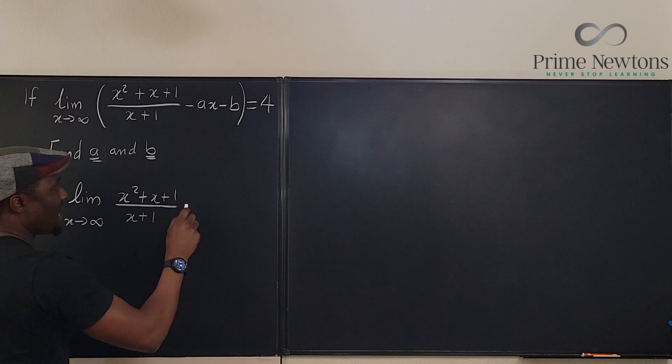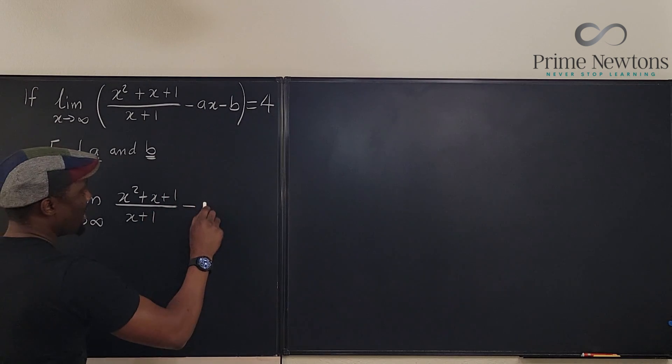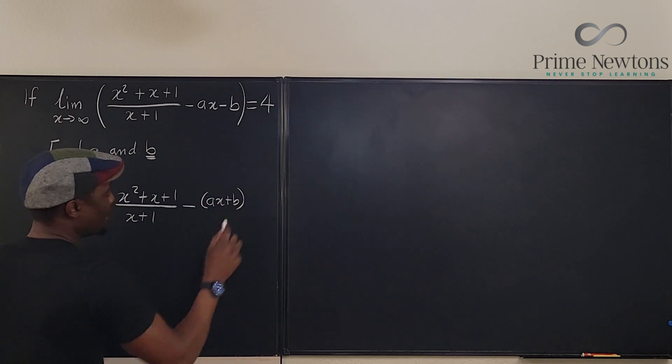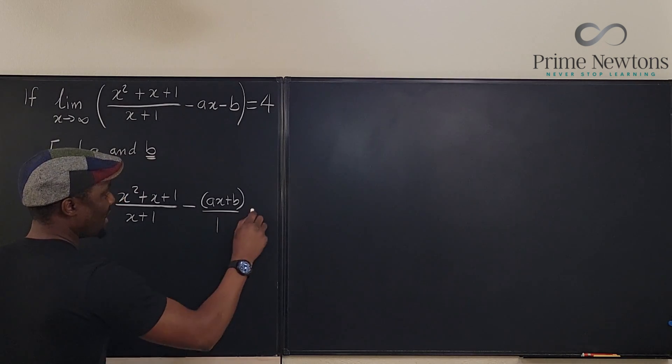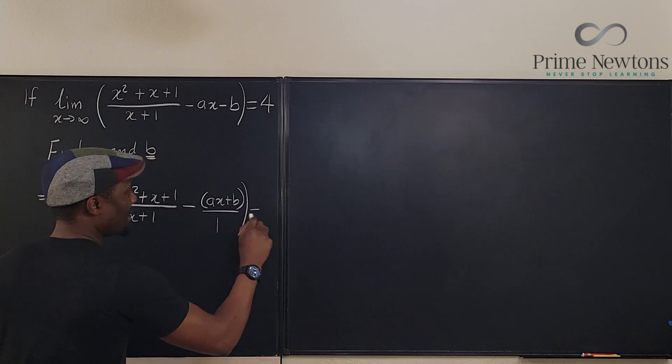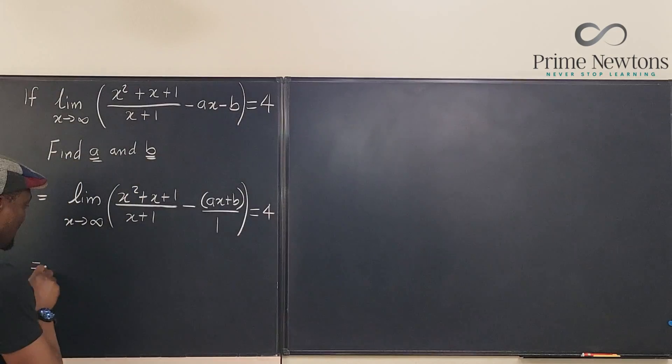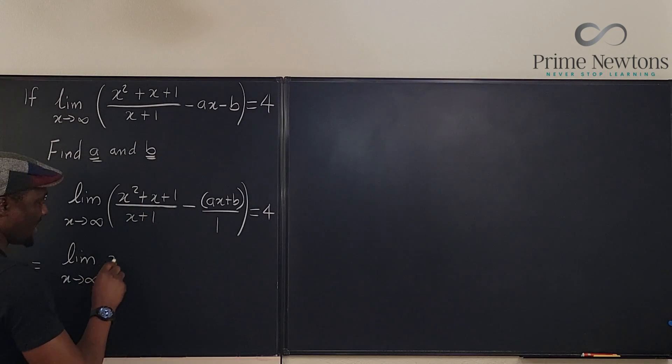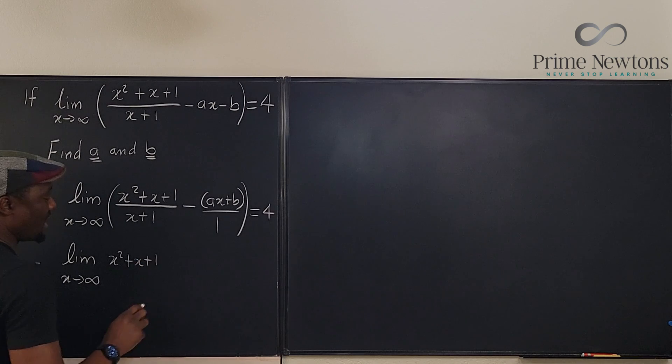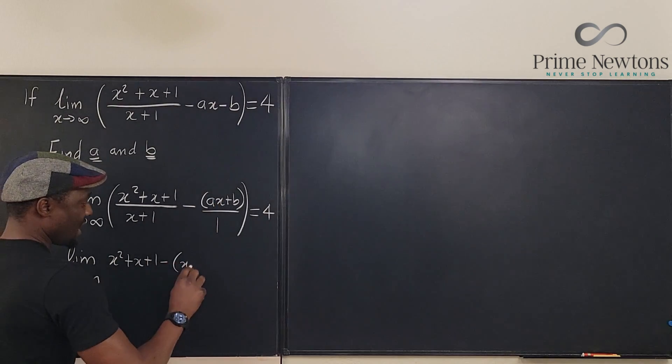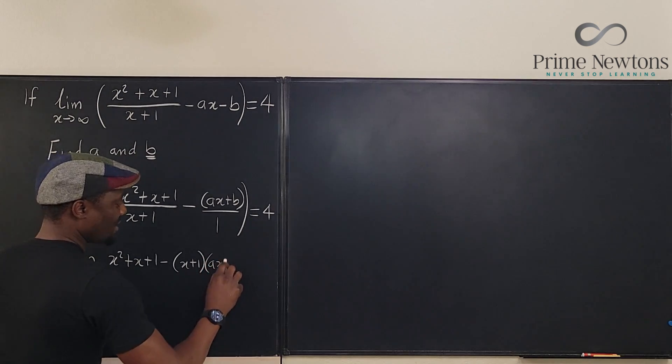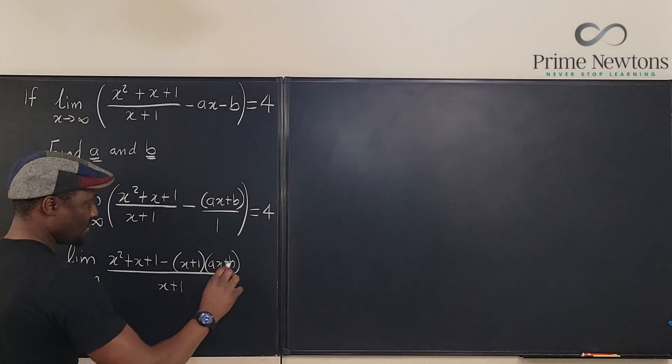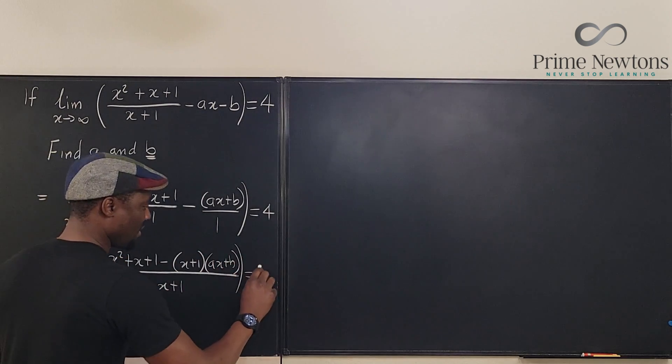Now I'm going to write this as minus (ax plus b) over 1. And I say that this limit is equal to 4. So we can write this as the limit as x goes to infinity of x squared plus x plus 1. If I multiply this by this I'm going to get minus (x plus 1) times (ax plus b) all over x plus 1. And this now gives me 4 as the limit.